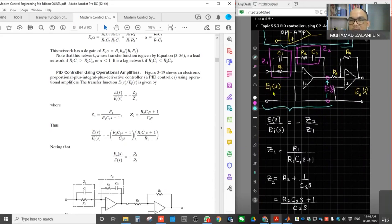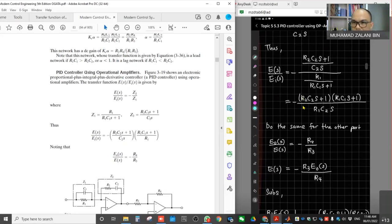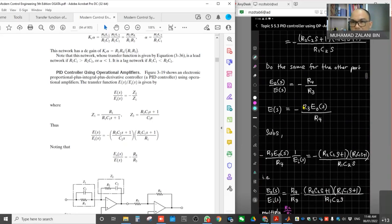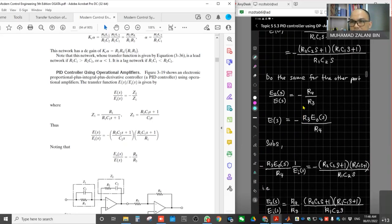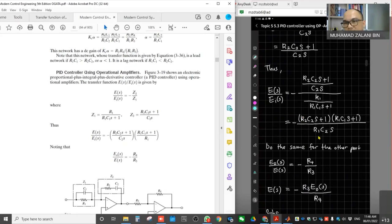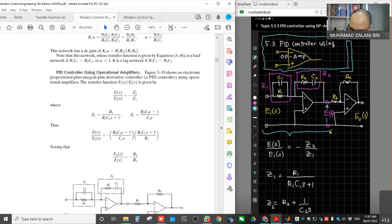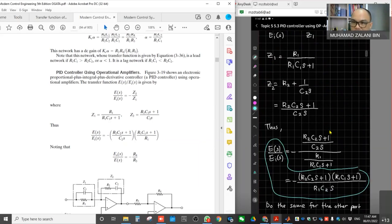We'll start with that, which is ES divided by EI is negative Z2 divided by Z1. Then we solve for it until we get E over EI. And then we do the same for the other part, the second part.